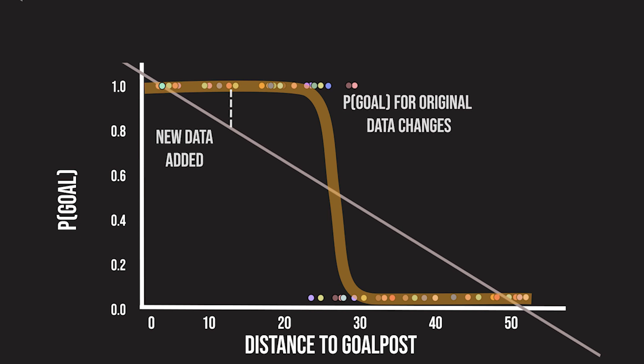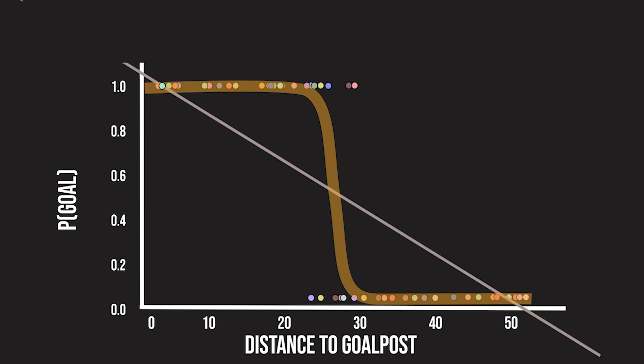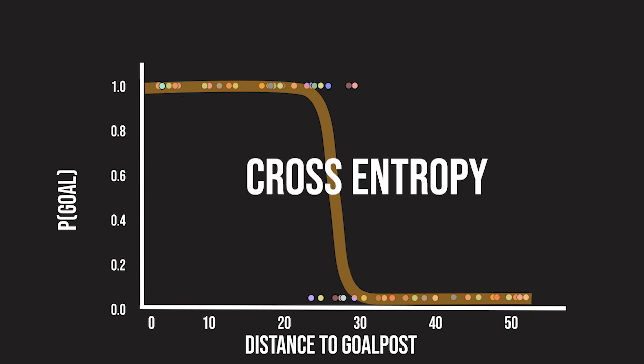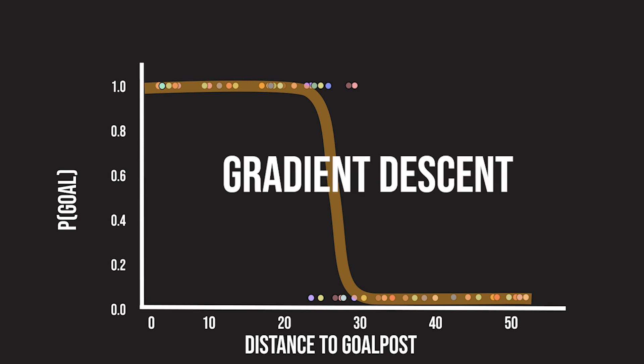You can think about logistic regression as linear regression with the added flexibility of the two flaps at the ends where the model is confident. As far as how it's trained, logistic regression uses cross entropy as the loss function and then runs the gradient descent algorithm, which we will explain in a future video.